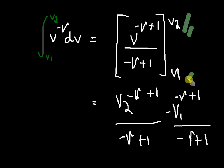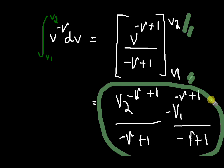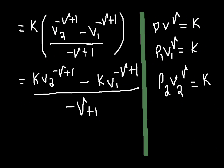Applying the upper and lower limits — this is the initial volume and this is the final volume — we get V2 raised to minus gamma plus 1 by minus gamma plus 1. Substituting this back into our equation, we get k into V2 raised to minus gamma plus 1 minus V1 raised to minus gamma plus 1, all divided by minus gamma plus 1. Since the denominator is the same, I write it together.